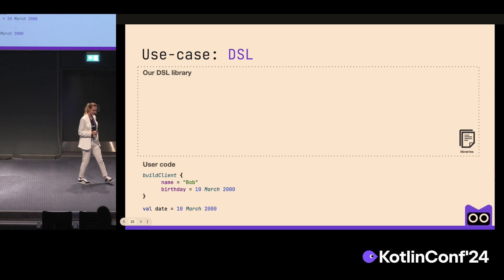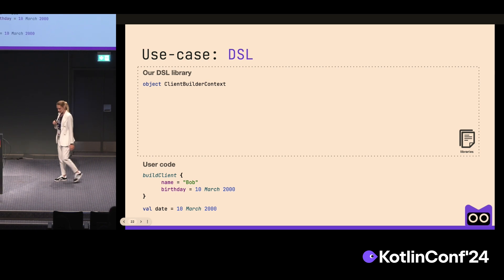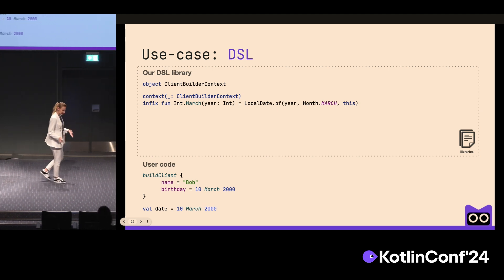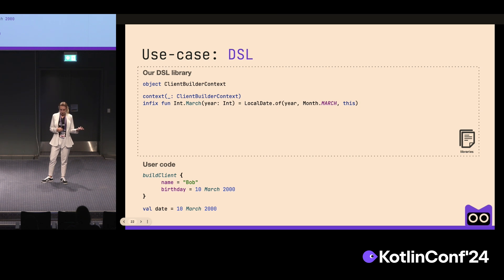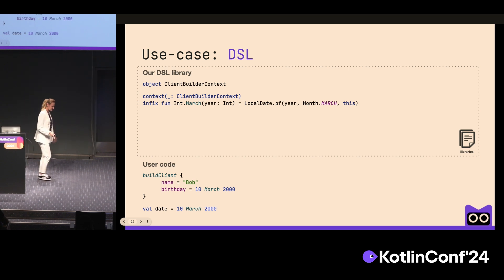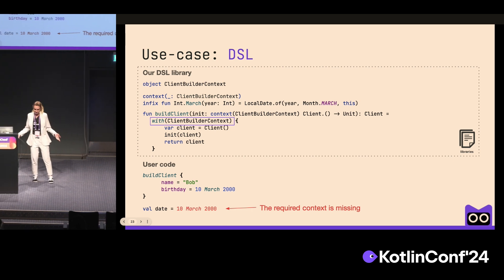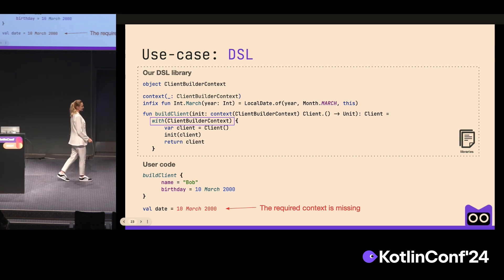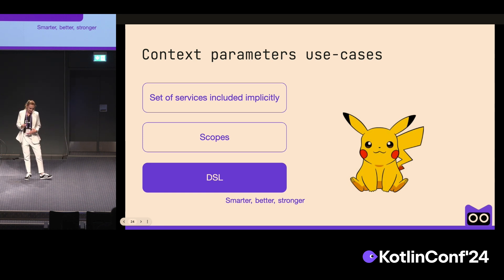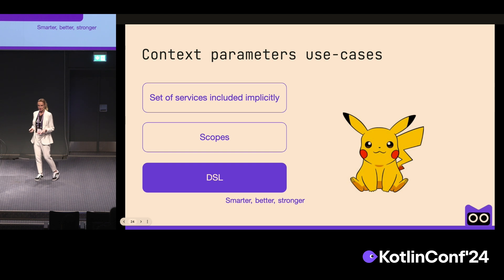Here's an interesting way to use context parameters. We create an object called ClientBuilderContext, then add a context parameter to our infix function. As seen in previous examples, there is no way to use this function outside of the required context. We don't want to force users to set the context explicitly, so we change the builder function to push the context there. Now there is no way to use our infix function outside the builder because the required context will be missing. With context parameters, you can create more complex DSL structures — you can declare a member available only when the specific DSL scope has certain type arguments.